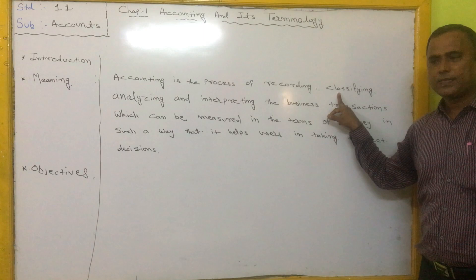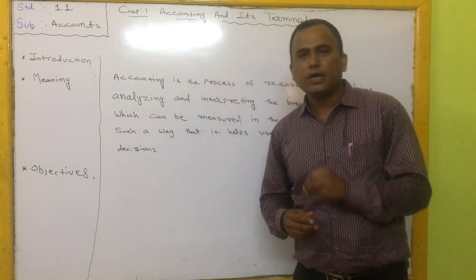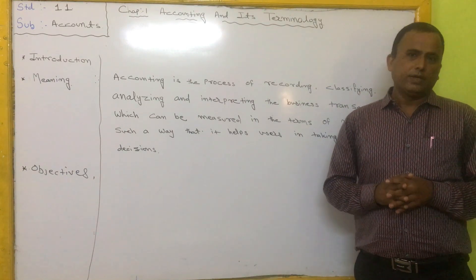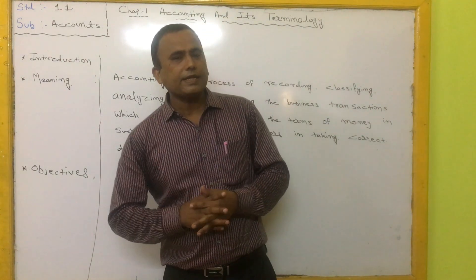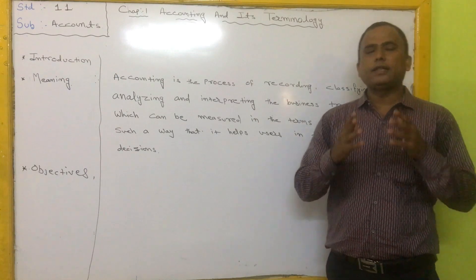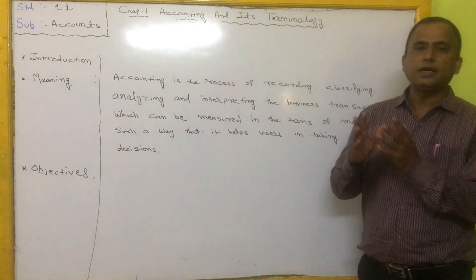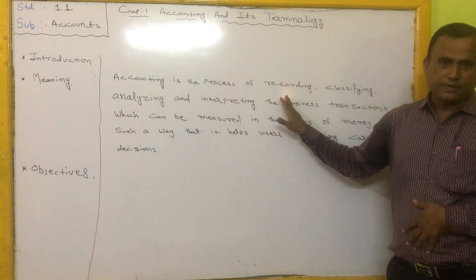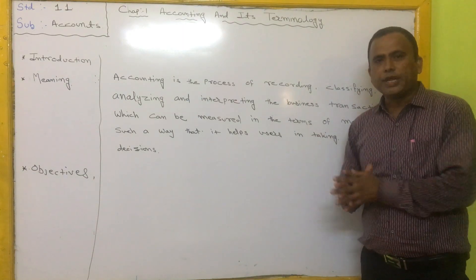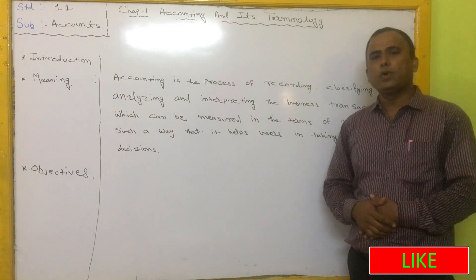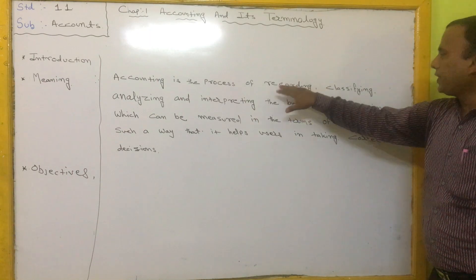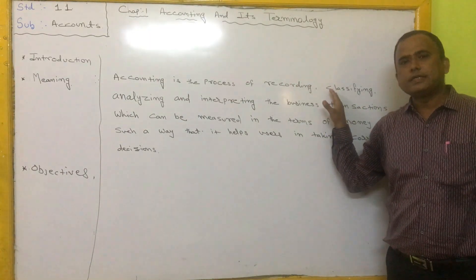The second process is classification. After recording a transaction in the accounting book, you have to classify the economic transactions into various categories. Generally, two types of transactions take place in a business: cash transactions and credit transactions. Cash transactions are recorded in the cash book, and credit transactions are recorded in various subsidiary books.